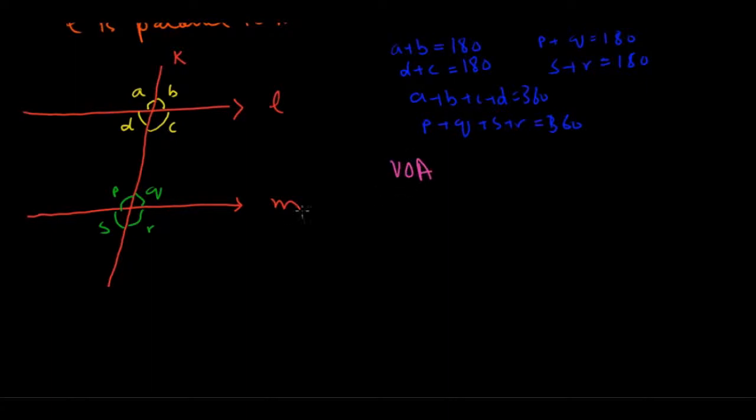So this is my shorthand VOA for vertically opposite angles. So if I look at this point, A and C, so A and C is a pair of vertically opposite angles. B and D. If I look at the second point here, I'll have P and R and S and Q as pairs of vertically opposite angles. So this is all we already know.